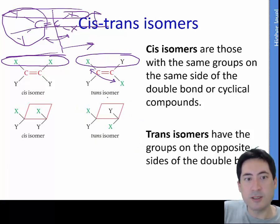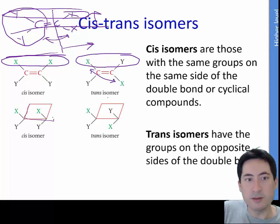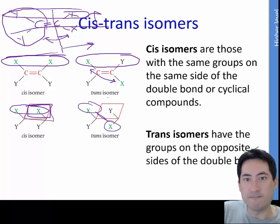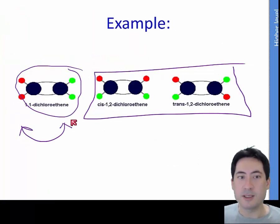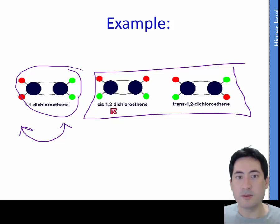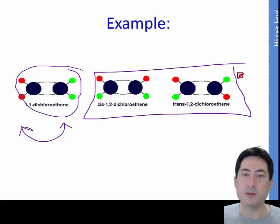Here we have a cis and here we have a trans. You can also lock them in place if it's a circular compound — they're on the same side of the double bond for cis, and here they've swapped over, so we'd call this trans. For naming, we just name the compound as normal, for example 1,2-dichloroethene, and note whether the groups are on the same side (cis) or opposite sides (trans).